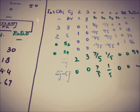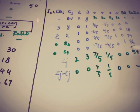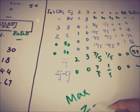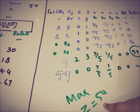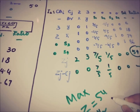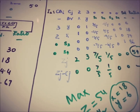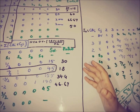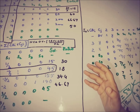Since all Zj − Cj values are either positive or zero, we are in the feasible optimal region and terminate the algorithm. The maximum Z is 54. The value of x is 18 and y is 6. Plugging x = 18 and y = 6 into the objective function gives Z = 54, which is the desired optimal answer. This is how we can solve any linear programming problem with the simplex method using the formulas and physical interpretation.